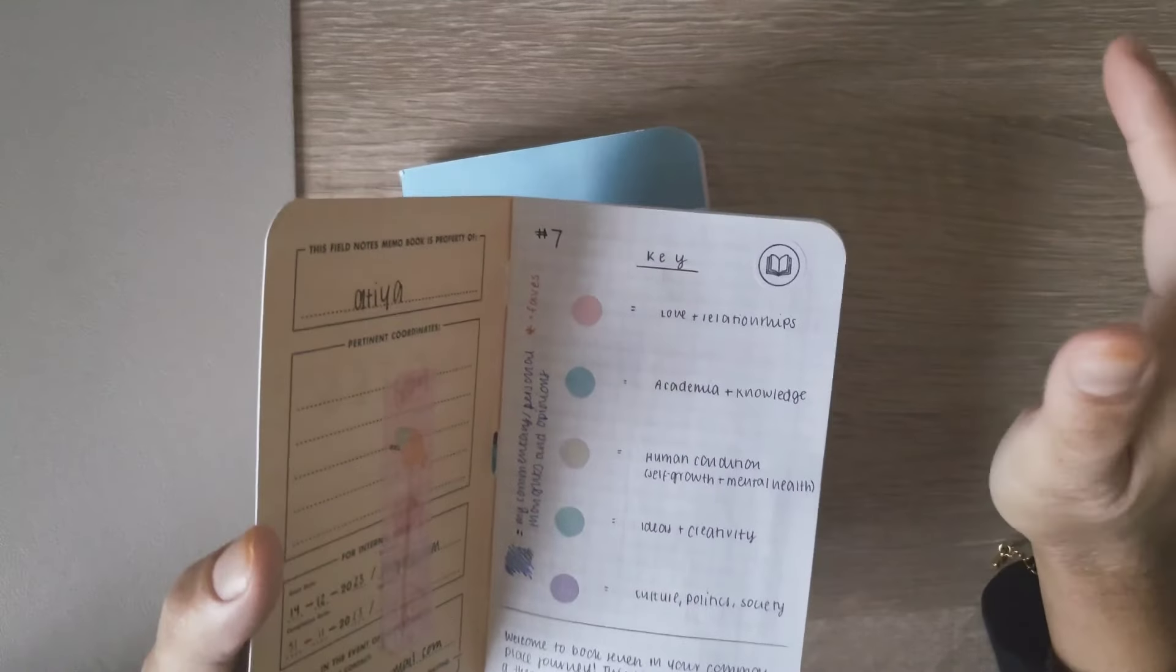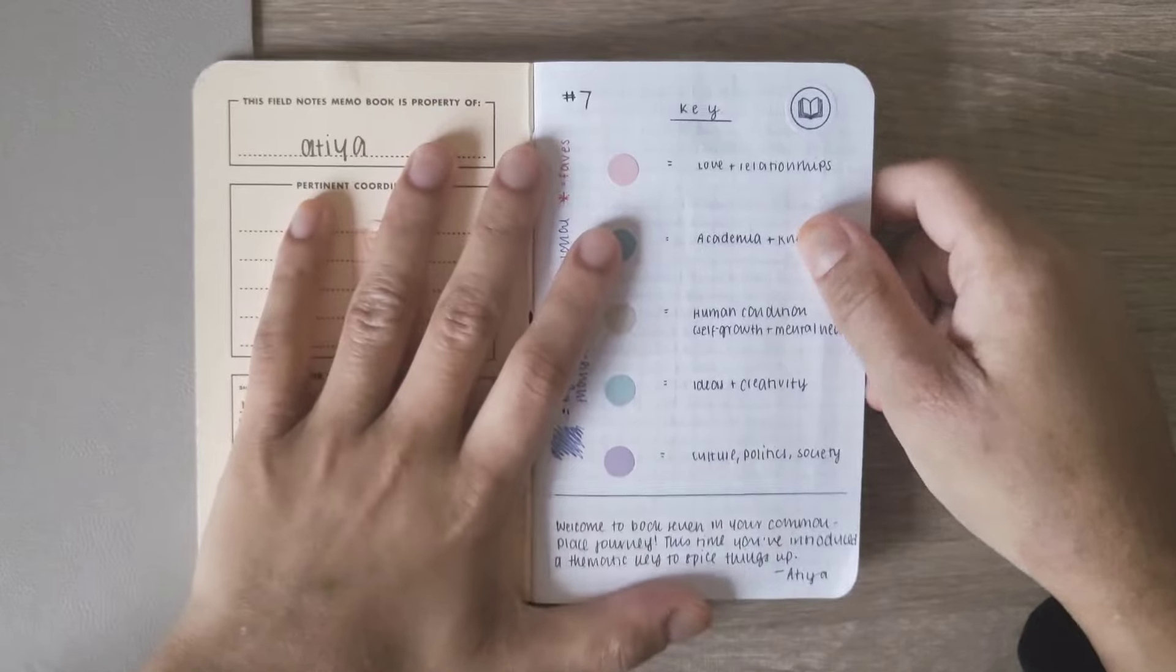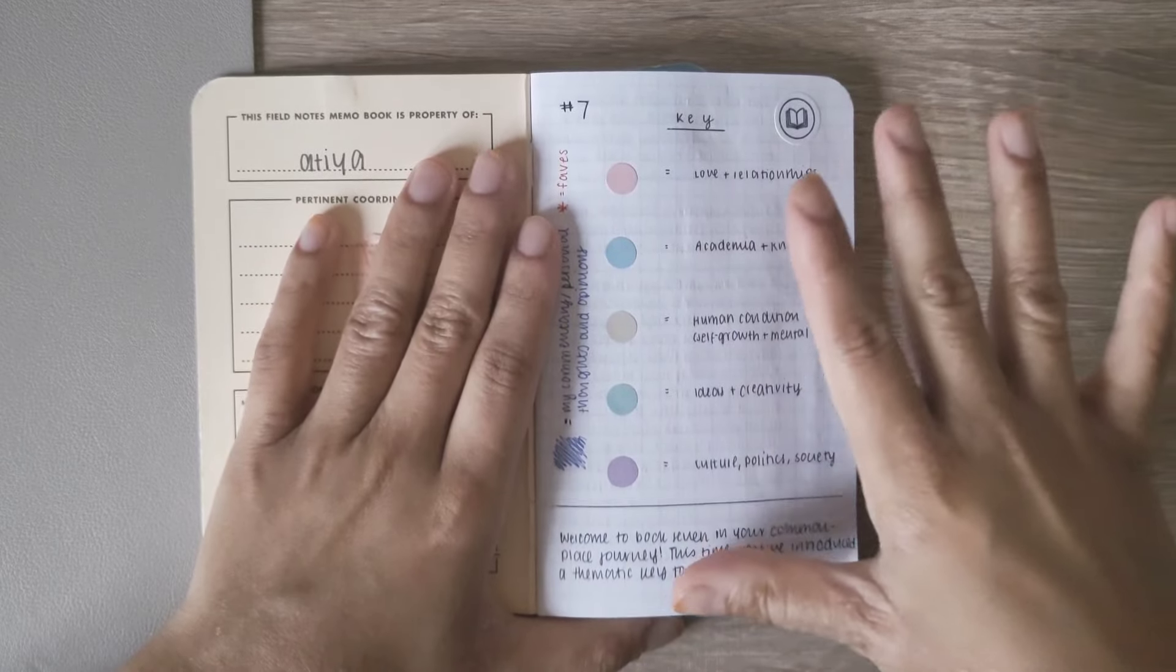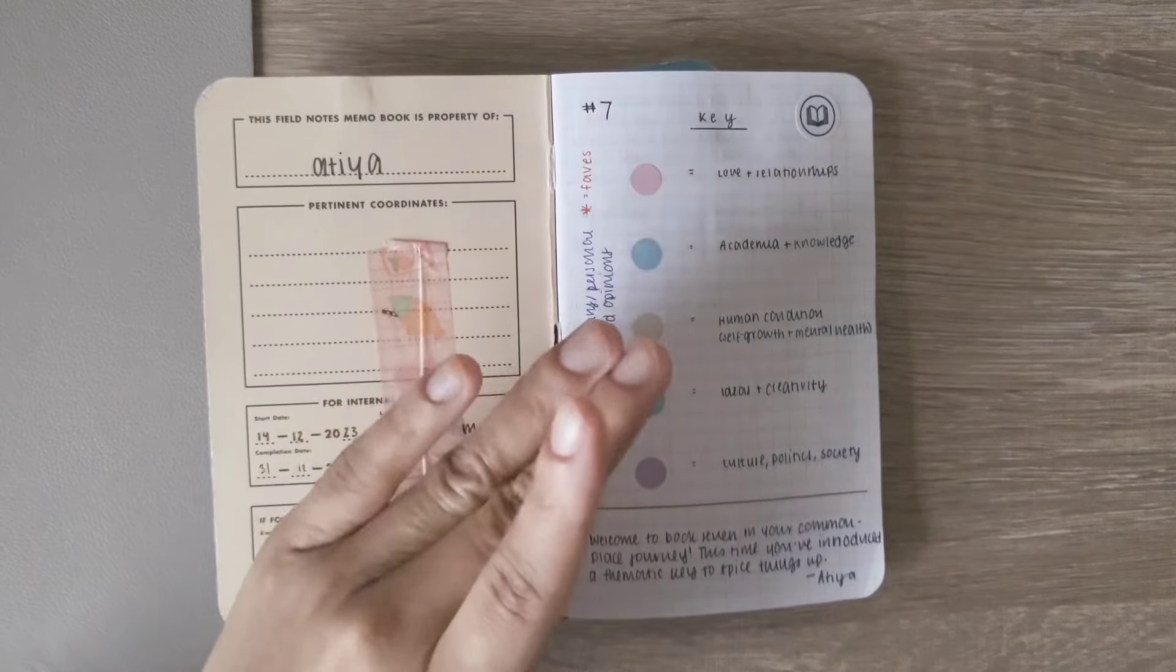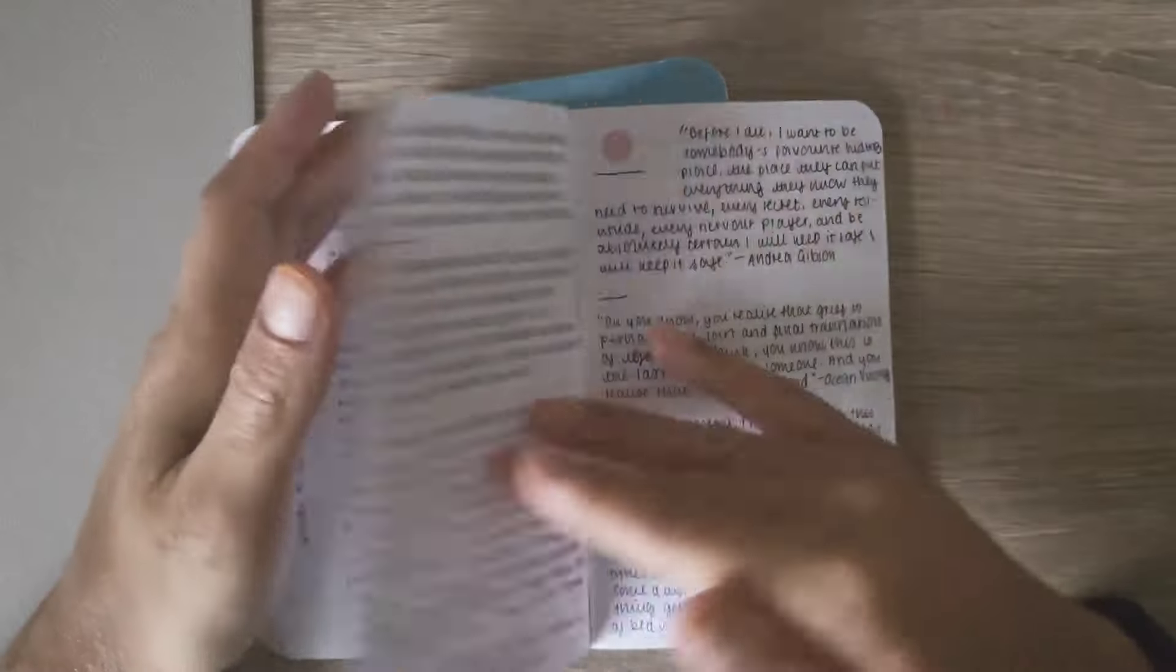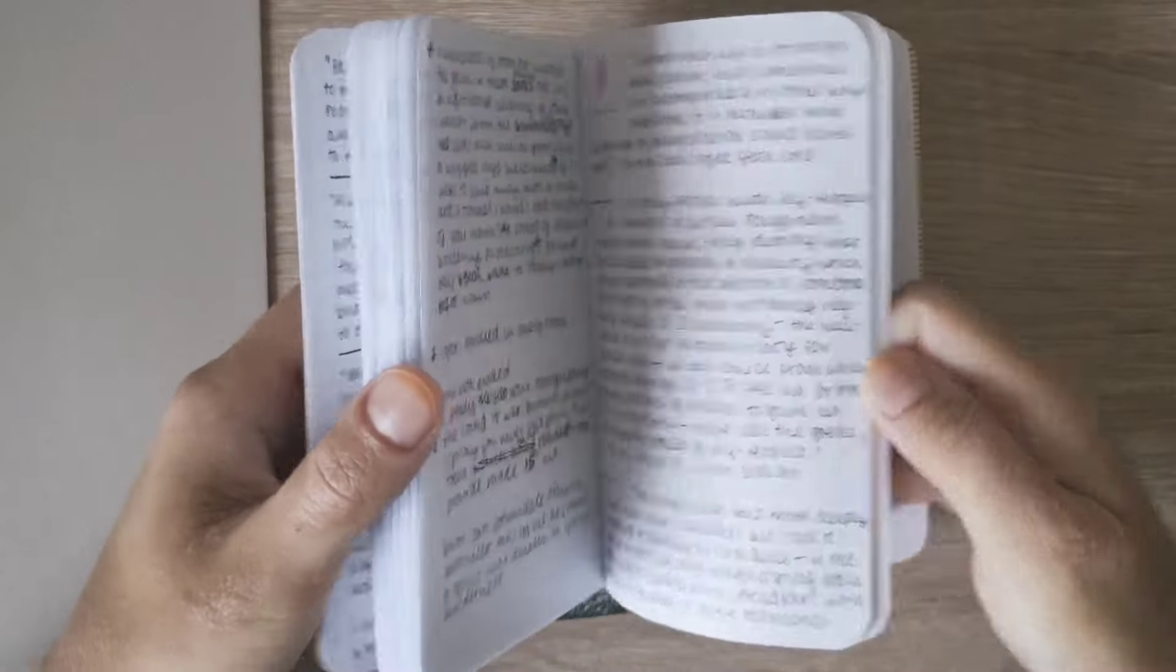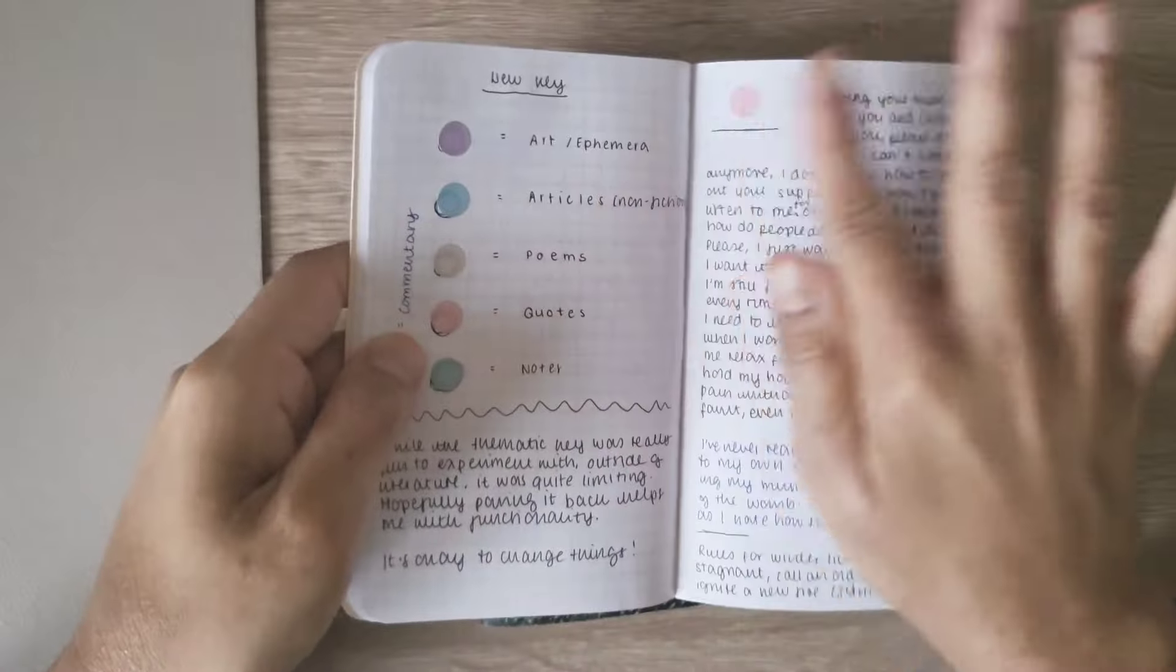So instead of being like one color represents a quote, I wanted to just do it in themes because I figured most of what I write is quotes anyway. So it'd be interesting to sort them into a theme. And although I didn't stick with this, it really helped me. If you're struggling with commonplacing and what to do or how to use it, I would really recommend doing something very experimental because even if you don't stick with it, there's something about pushing yourself outside the box that really helps you just find your feet. So about halfway through, I changed up my key.